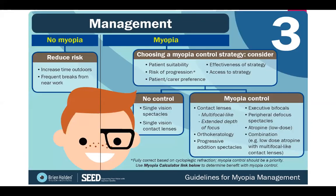If you do have myopia, you can choose a myopia control strategy. You want to look at the risk of progression, the effectiveness of the strategy, and whether it's available in your country. There are two options: no control — just regular glasses or single vision contact lenses — or myopia control, which includes multifocal center distance soft contact lenses, extended depth of focus lenses, orthokeratology, progressive addition spectacles, bifocals, peripheral defocus spectacles, and pharmacological treatment such as atropine, or even a combination of therapies.